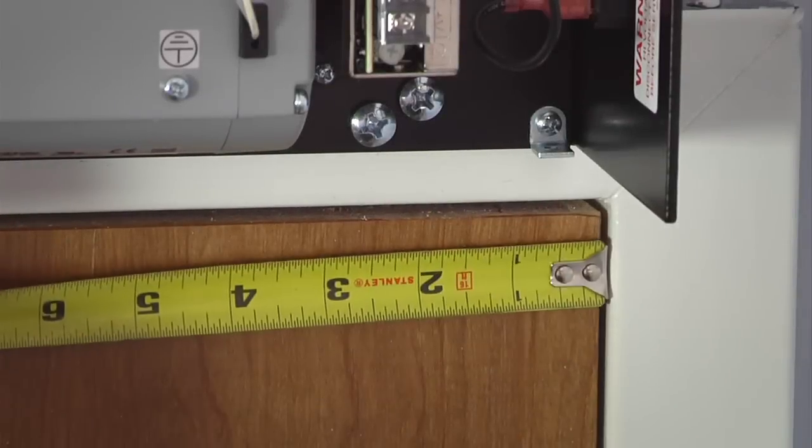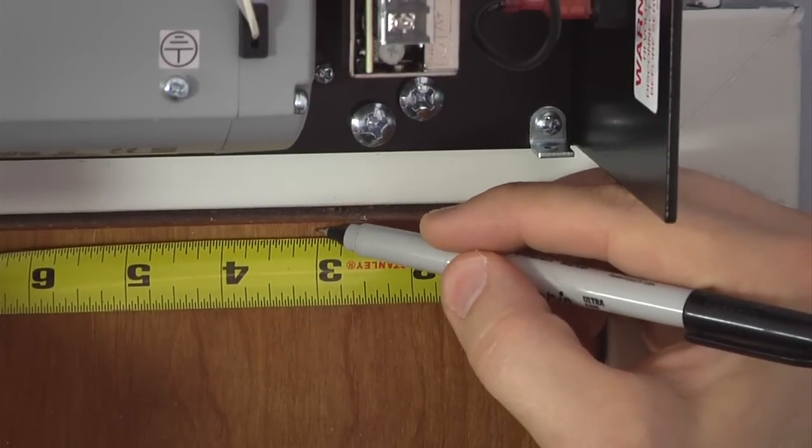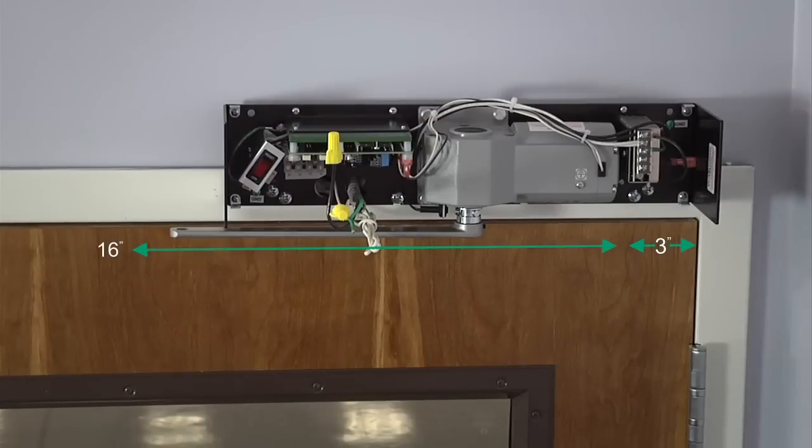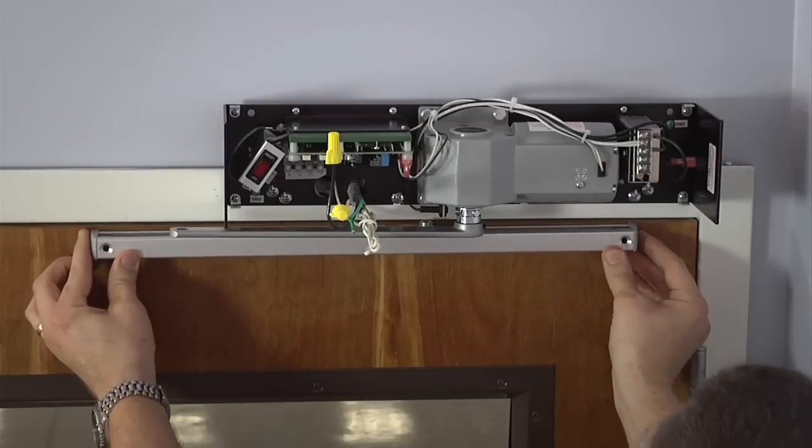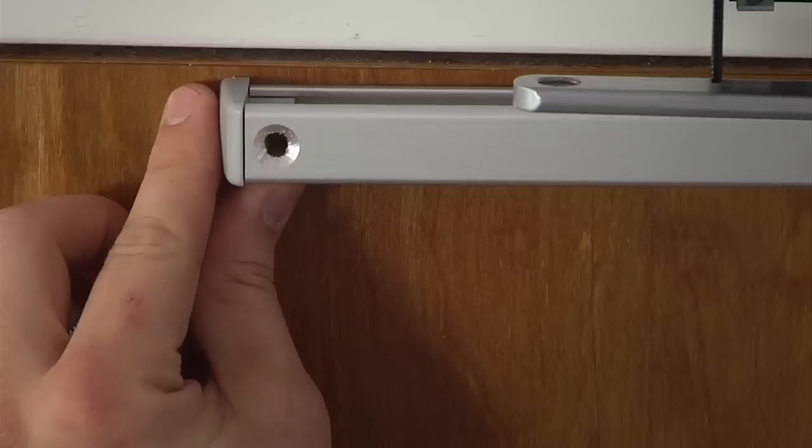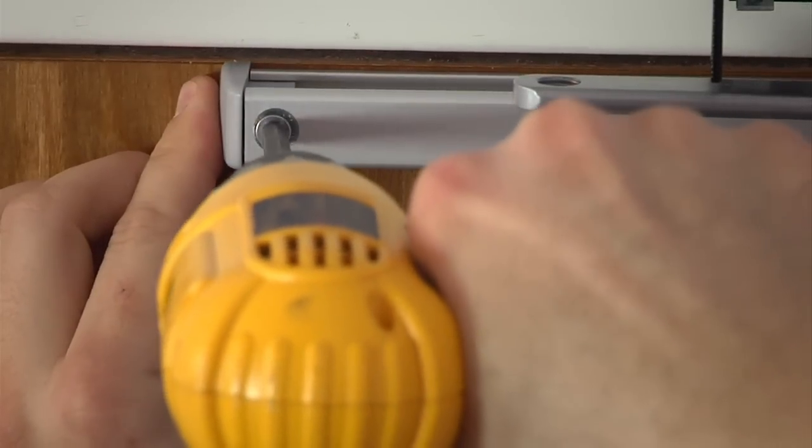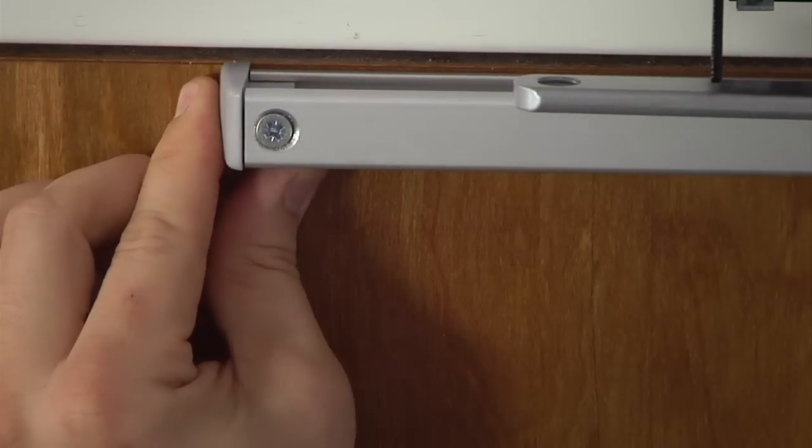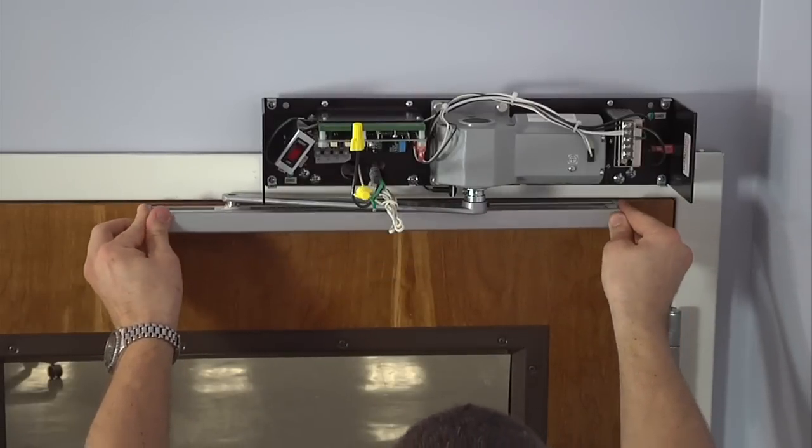The next step is to mount the track to the top of the door. Use the measurements provided on the template. Measure from the edge of the door on the hinge side. Be sure the end cap on the track is flush with the top of the door. Drill and tap the holes for the standard screws or use wood screws. Once the screws are secure, snap on the track cover.